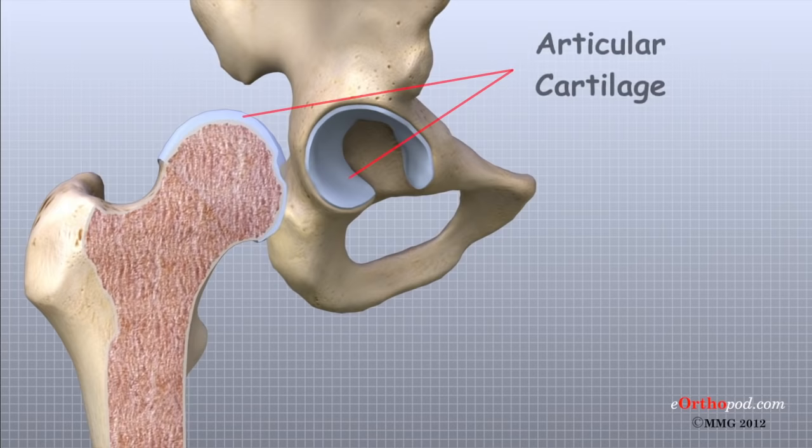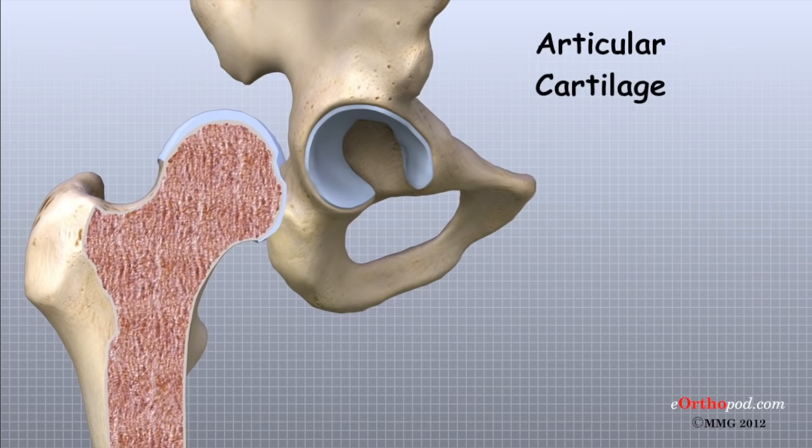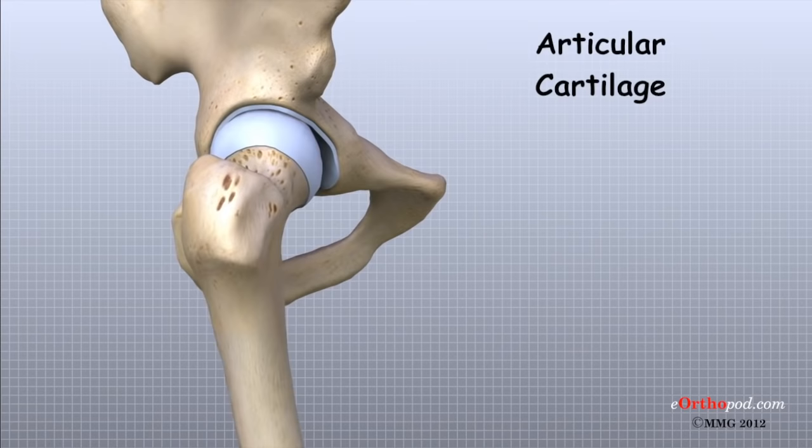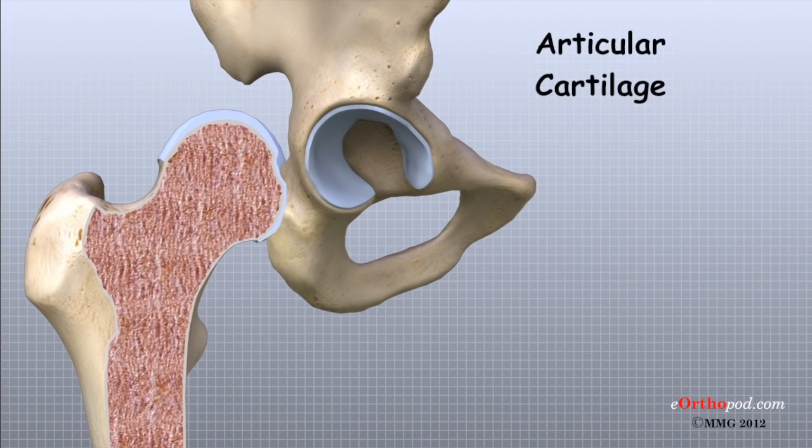Articular cartilage is the material that covers the ends of the bones of any joint. Articular cartilage is about one quarter of an inch thick in large weight-bearing joints like the hip. It is white and shiny with a rubbery consistency. It is slippery, which allows the joint surfaces to slide against one another without causing damage. The function of articular cartilage is to absorb shock and provide an extremely smooth surface to make motion easier.